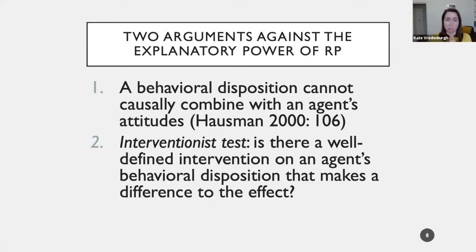One argument found in Dan Hausman purports to show that the notion of a revealed preference is incoherent. The version I'll focus on is the claim that behavioral dispositions cannot causally combine with an agent's attitudes. Because a behavioral disposition can't causally combine with attitudes, and explaining individual choices requires invoking agents' attitudes like beliefs — otherwise how could we distinguish mistaken choices, where I'm under the illusion my cup contains coffee but it actually contains oil, from a genuine choice of coffee over water?